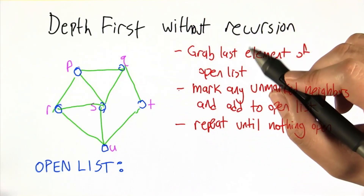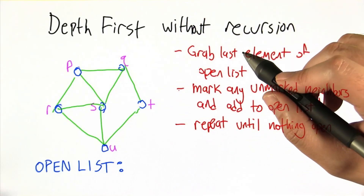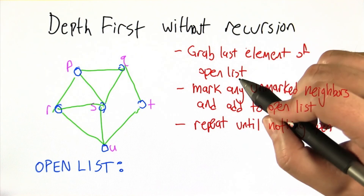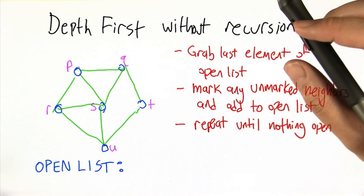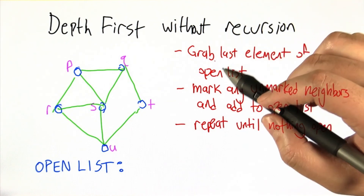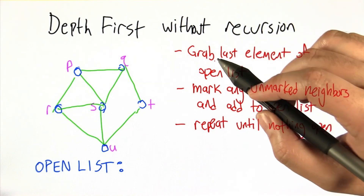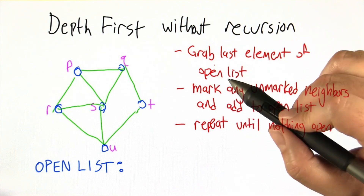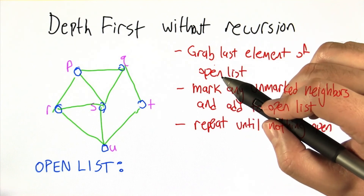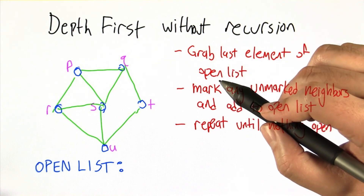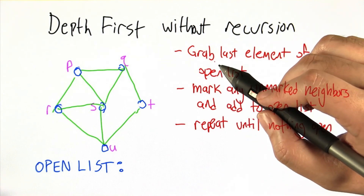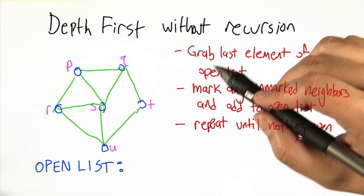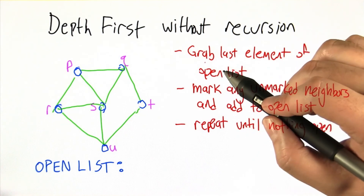One of the wonderful things about depth-first search is that it can be implemented straightforwardly with recursion, which makes it very easy to read and pretty easy to reason about. Not so with breadth-first search. Breadth-first search is going to require a little bit more care to implement it in a way that keeps track of things in the right order.